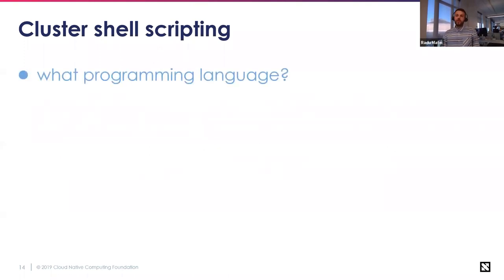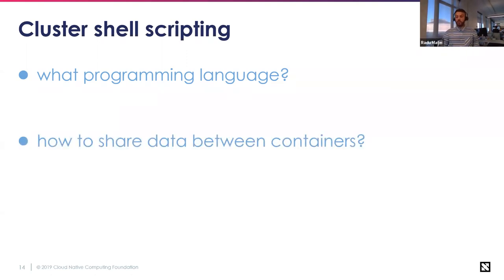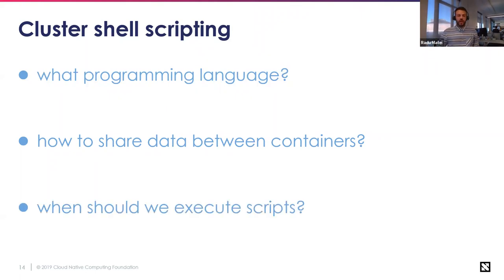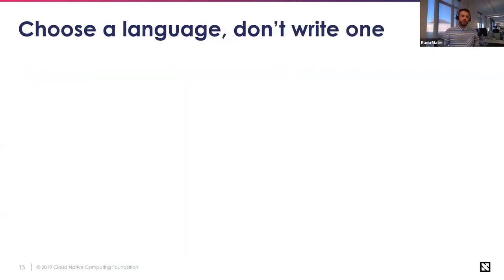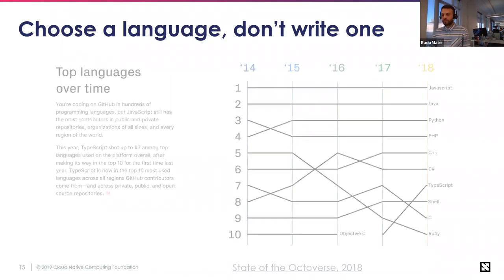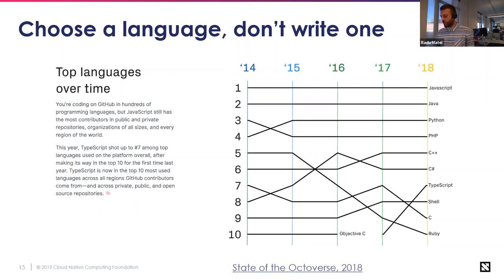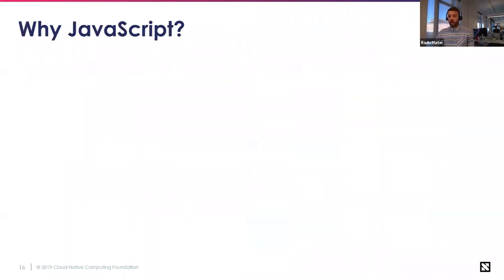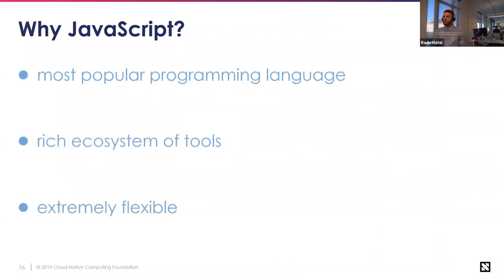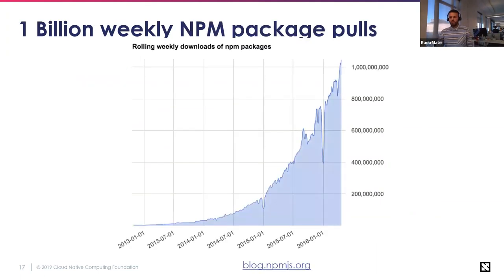Thinking about cluster shell scripting, Brigade had to answer a few questions. First: what programming language should we use? We decided to choose a language and not write one. In 2017–2020, if you're thinking about using a programming language to reach as many people as possible, honestly there's only one language that fits — JavaScript, regardless of what we think about it. It's been the number one programming language over the last couple of years in all metrics. We chose JavaScript because it's extremely popular, has a rich ecosystem of tools, is extremely flexible, and has more than one billion weekly NPM package downloads.